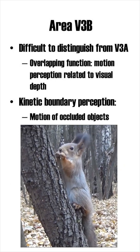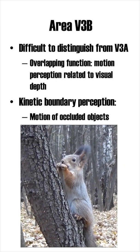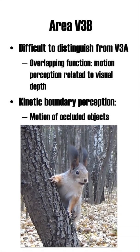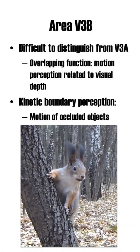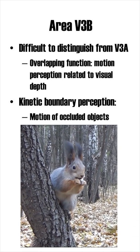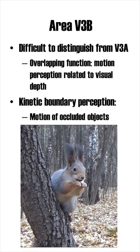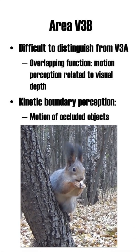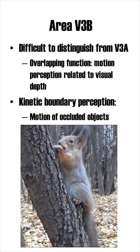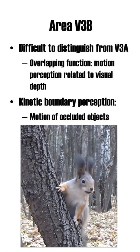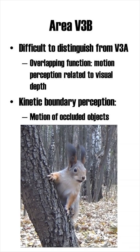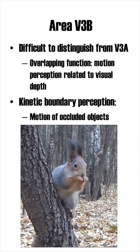Some studies have indicated that area V3b is difficult to distinguish from V3a. As such, V3b is sometimes seen as part of a larger area that encodes visual motion and visual depth. However, other studies have provided evidence for a specialized function of V3b.